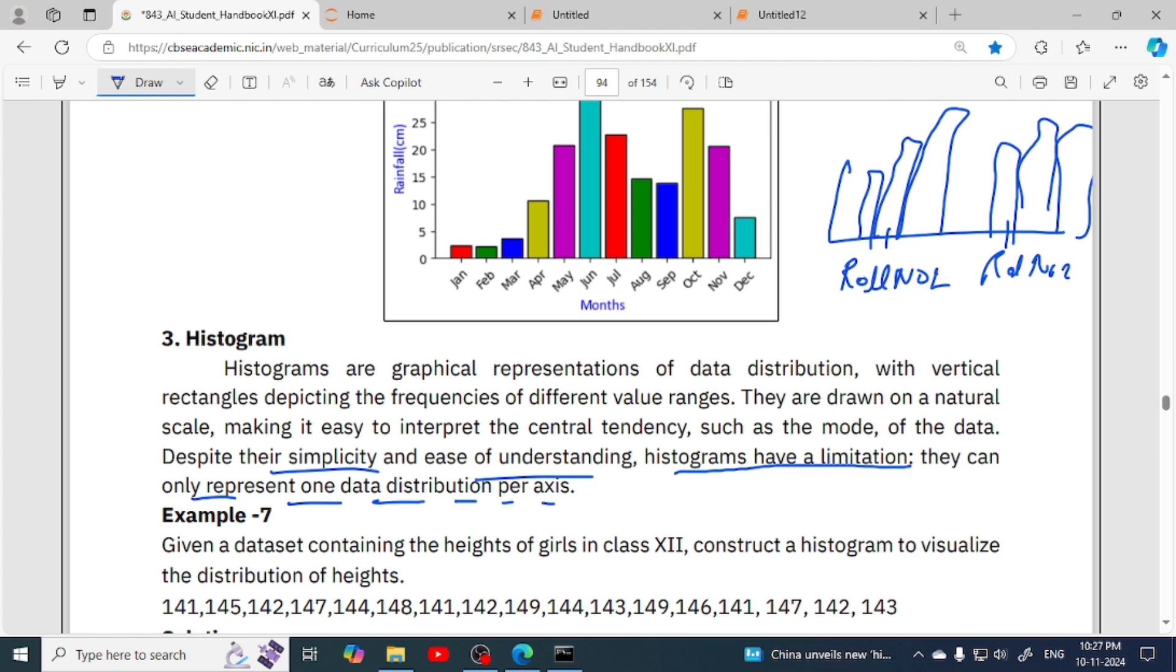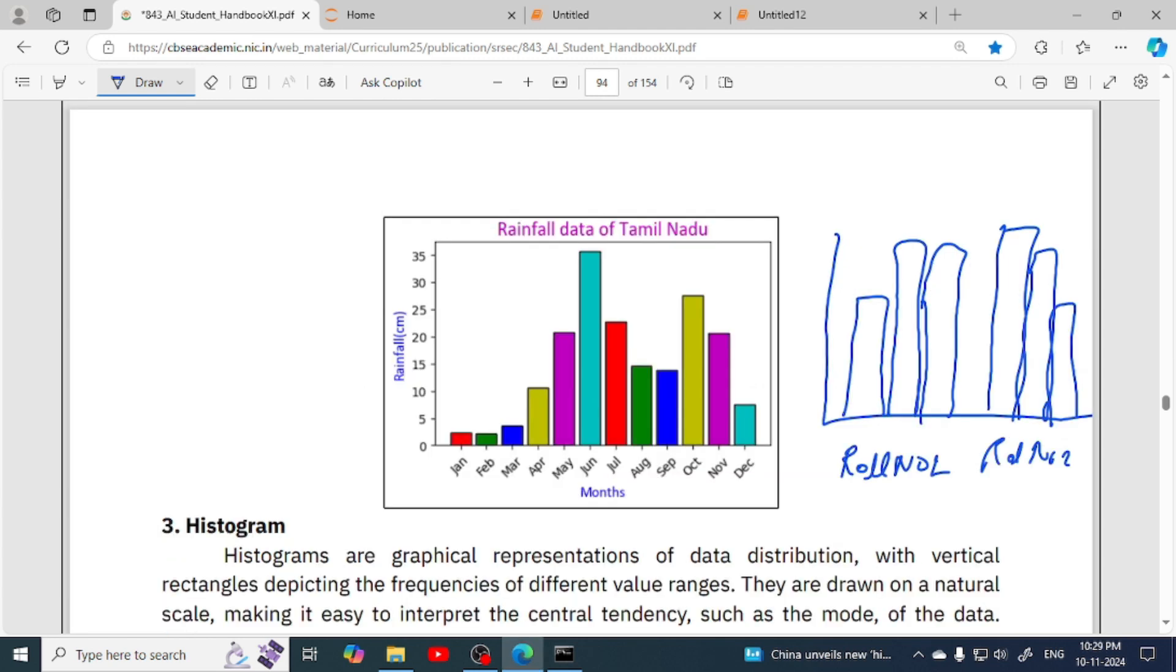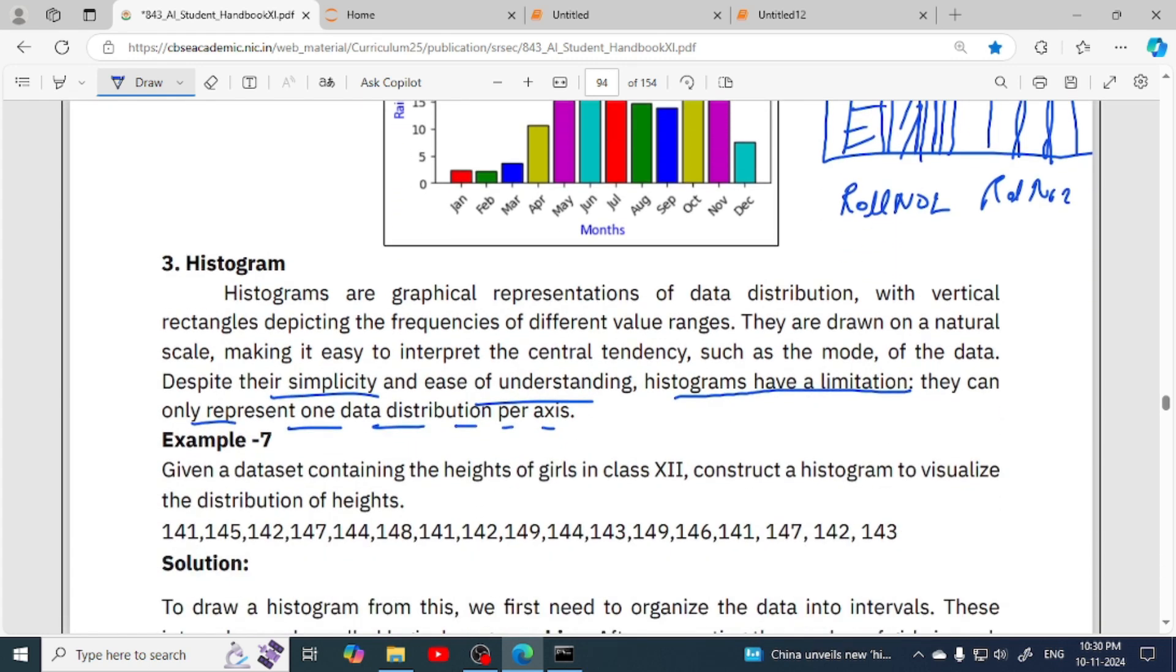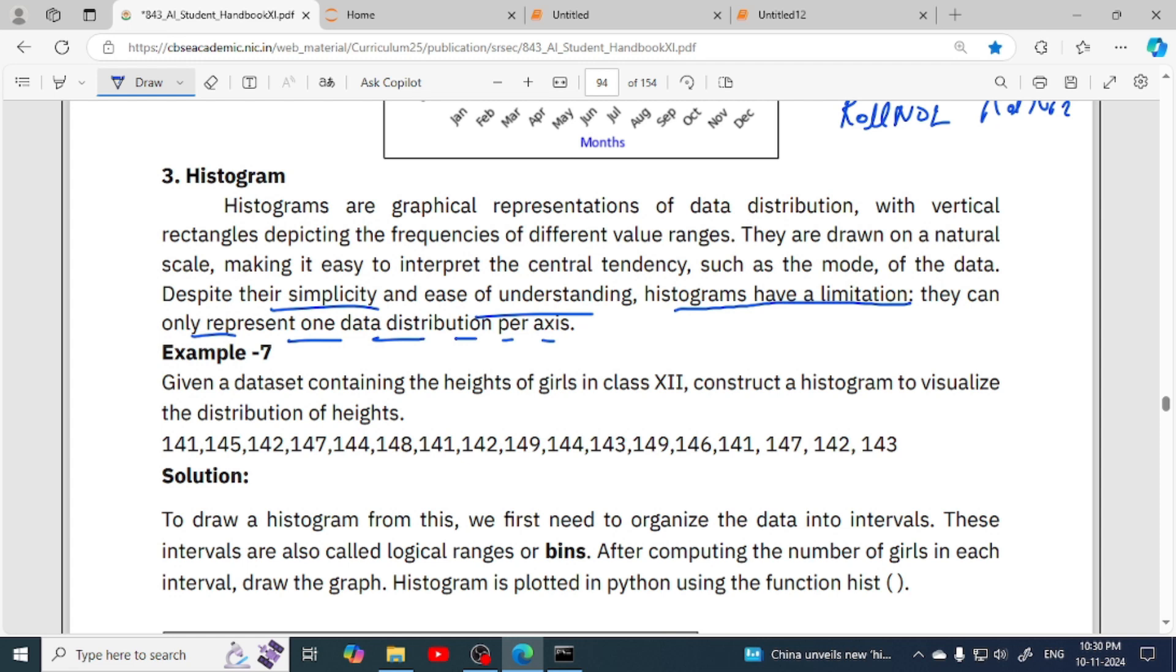It is possible in bar chart using different patterns. We can differentiate these bars - for example, for math we can draw such patterns, then for English we can draw slanting lines, and here we can draw vertical lines. In this way we can show more than one category in bar chart, which is not possible in histogram.